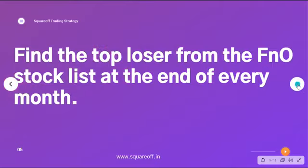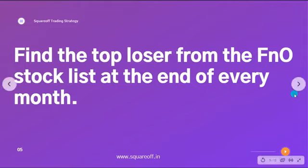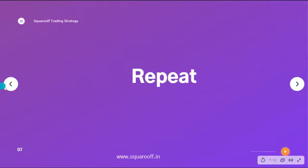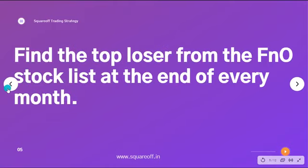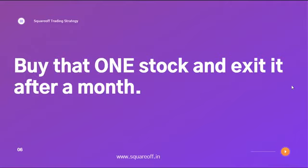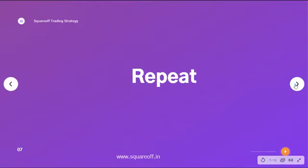The rules of this strategy are straightforward: find the top loser from the FNO stock list at the end of every month, buy that one stock, hold it for one month, then exit it and repeat the process. You find all the FNO stocks, identify the top loser, and buy that stock in the cash segment — you can buy in futures but the risk is higher. So we use FNO stocks as a filter criteria, buy the top loser at month end, hold for one month, then exit.